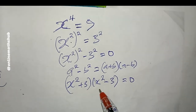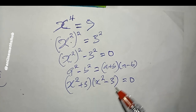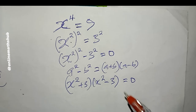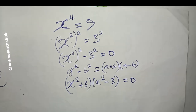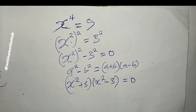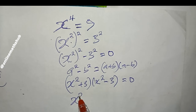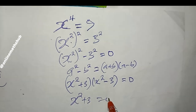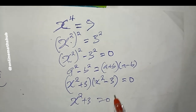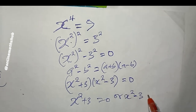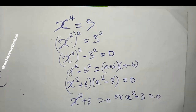Now I'm going to apply the zero product rule, which says that when the product of two or more terms equals zero, it's either any one of the terms equals zero or all of them do. So it is either x² + 3 = 0 or x² − 3 = 0.